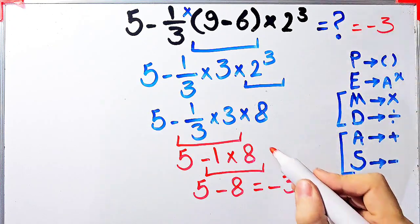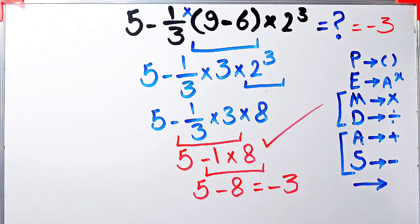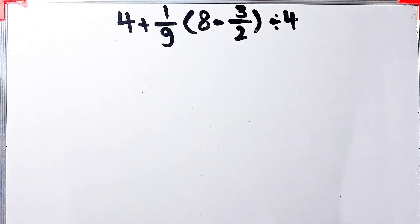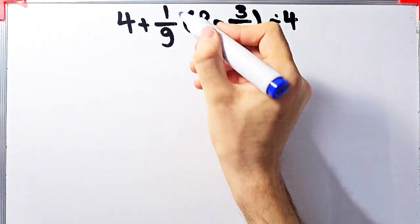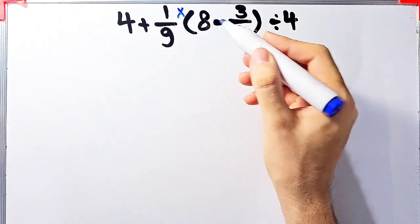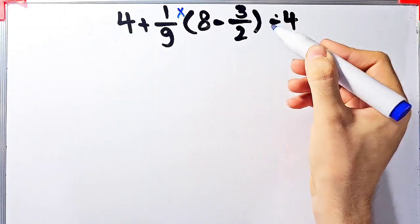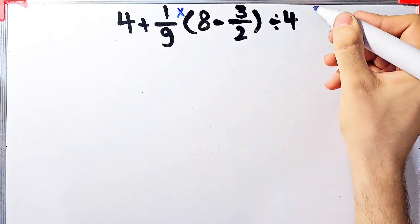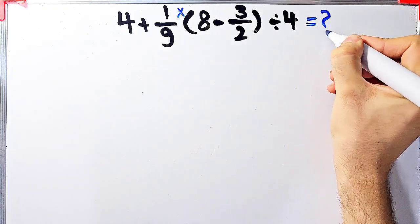Let's solve another question about the PEMDAS rule. 4 plus 1 over 9, then times open parentheses 8 minus 3 over 2 close parentheses, divided by 4. What is the answer of this question?